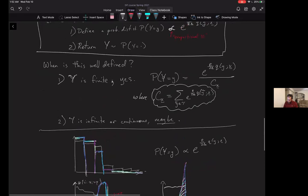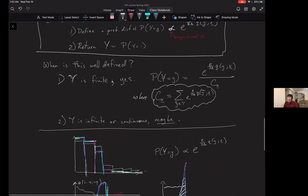Just recapping where we are. We defined this family of selection problems. These are defined by a set of possible outcomes and a score function, and any such problem defines an instance of the exponential mechanism. That's an algorithm that takes a dataset and samples an output with probability that increases exponentially with the score. The constant in that exponential increase is going to depend on the parameter epsilon and also on the sensitivity delta. We'll see why that is when we do the privacy analysis shortly.